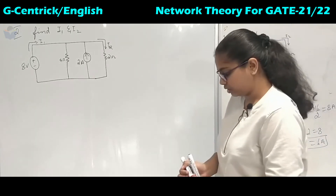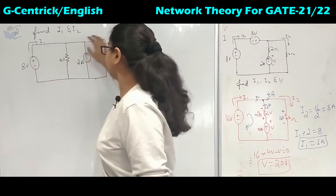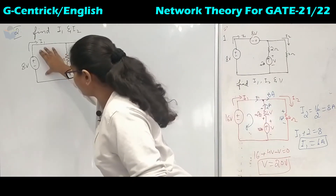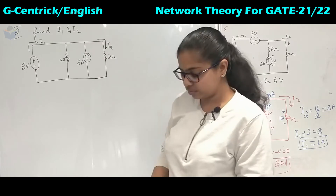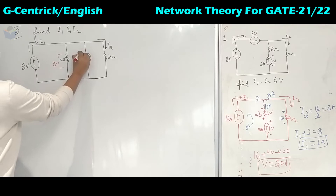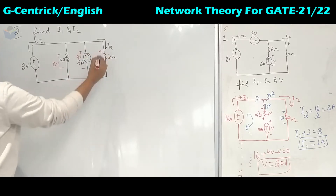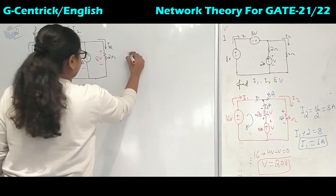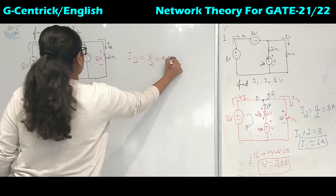Coming to the second question, they have asked us to find I1 and I2. Here is I1 and here is I2. Again in parallel, 8 volts appears here, here, and here as well. So this is 8 volts, here also 8 volts, and here also 8 volts. We can find I2 easily: I2 equals 8 divided by 2, that is 4 amperes.